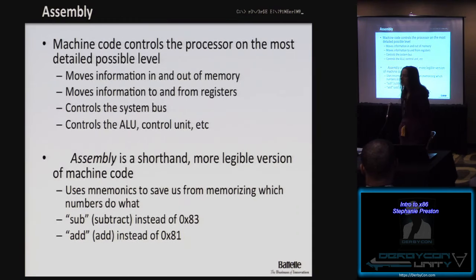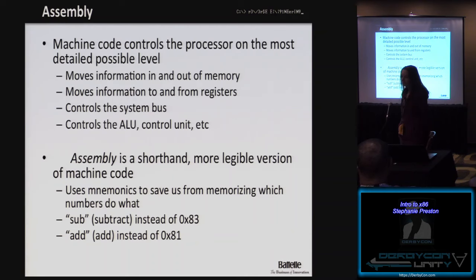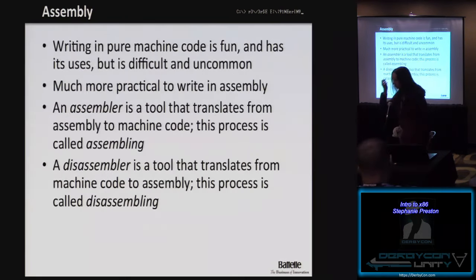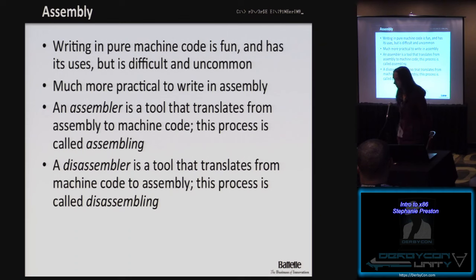Machine code controls the processor on the most detailed level possible. It's responsible for moving information in and out of memory to registers internal to the CPU, controls the system bus, and controls your ALU and control unit. Assembly, on the other hand, is a shorthand, more legible version of machine code. It uses mnemonics to save us from having to memorize machine code — for example, saying 'sub' instead of the machine code hex 83. An assembler translates from assembly to machine code, and a disassembler translates from machine code back to assembly.